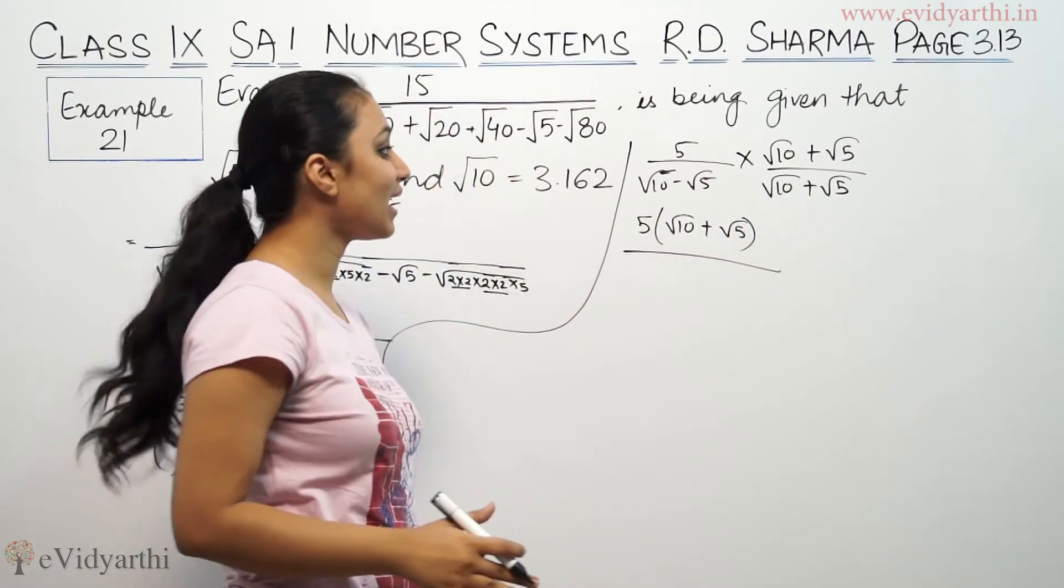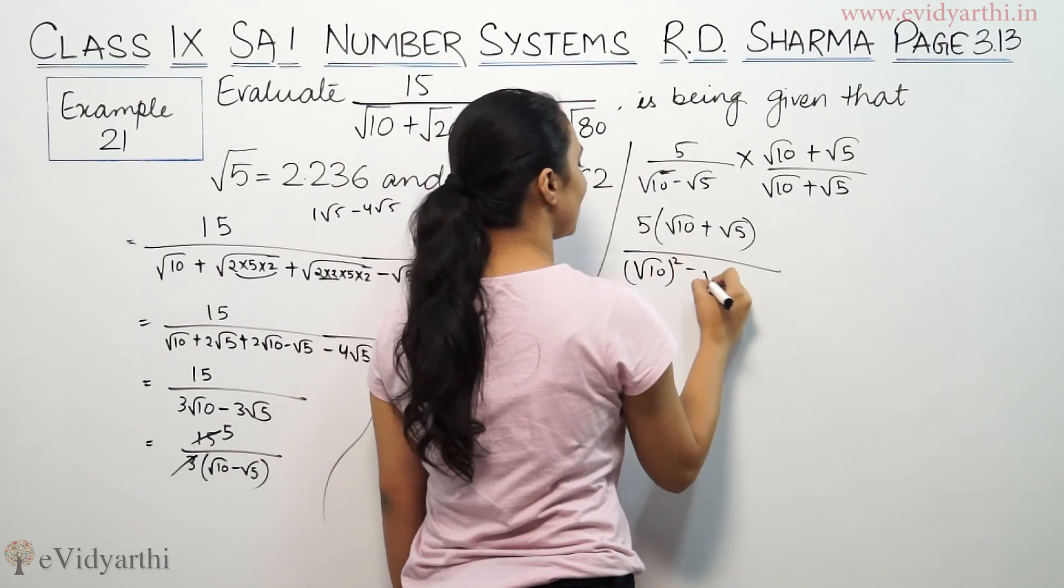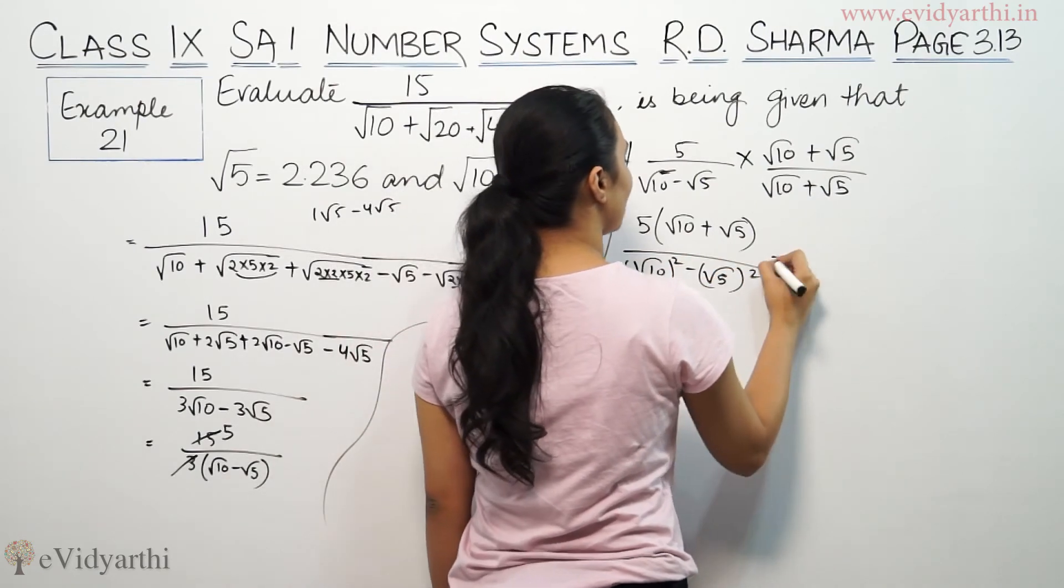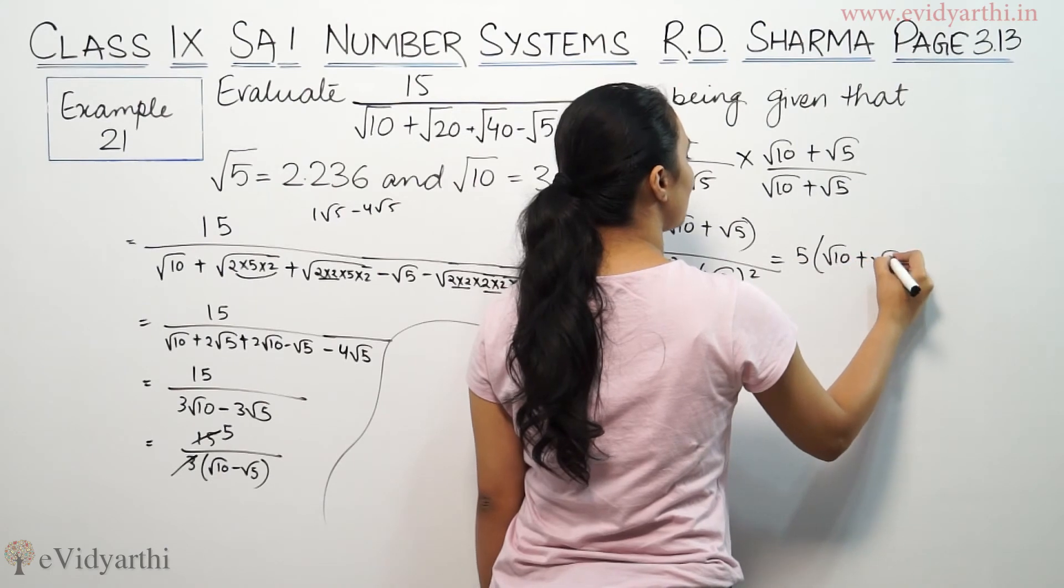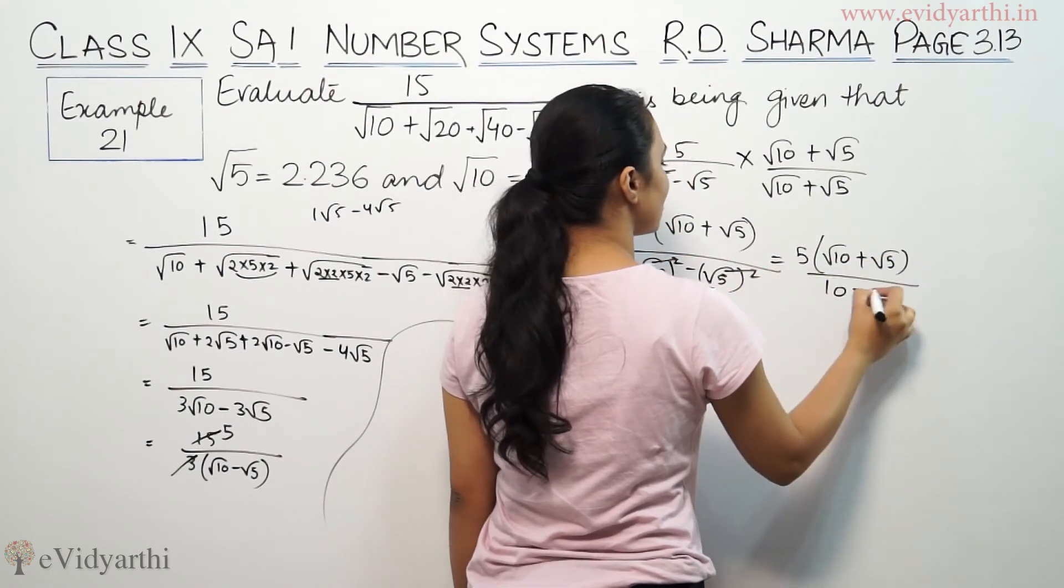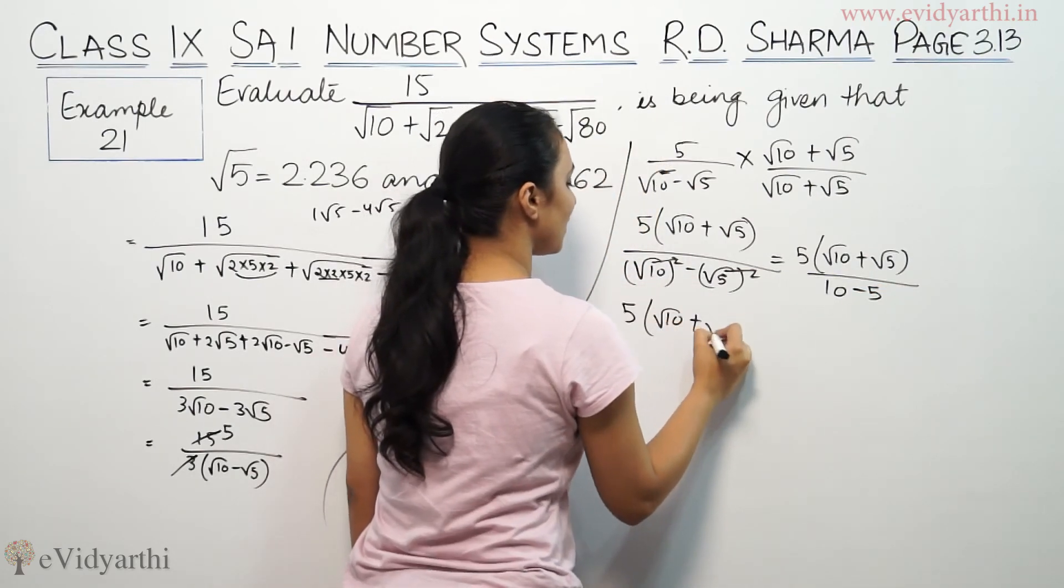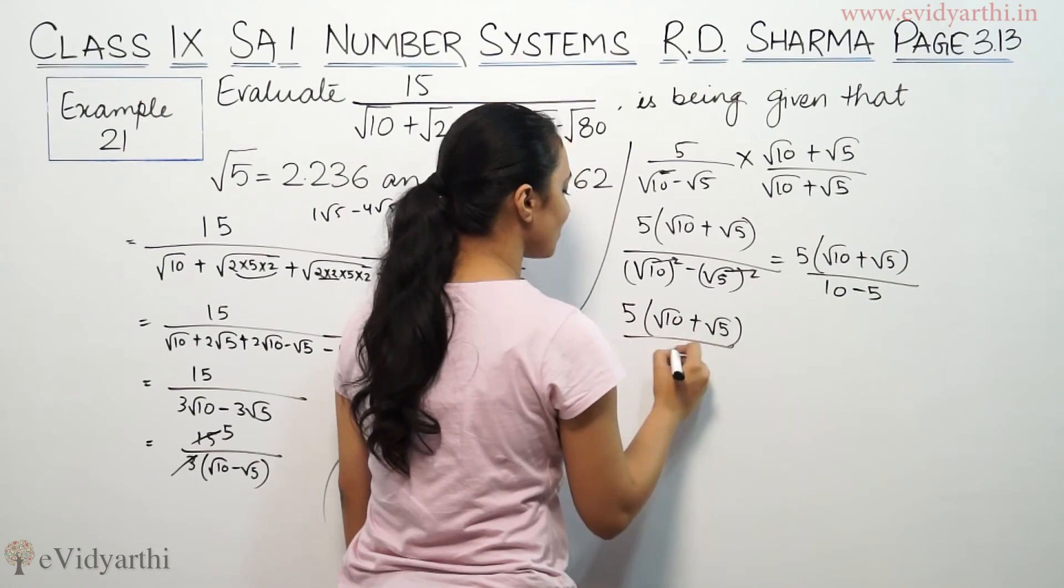Using A minus B times A plus B equals A squared minus B squared, we get 5 root 10 plus root 5 upon this is 10 minus 5. So 5 bracket root 10 plus root 5, 10 minus 5 is 5.